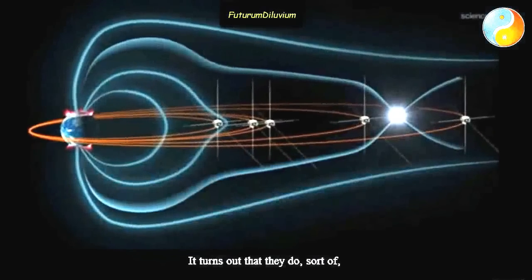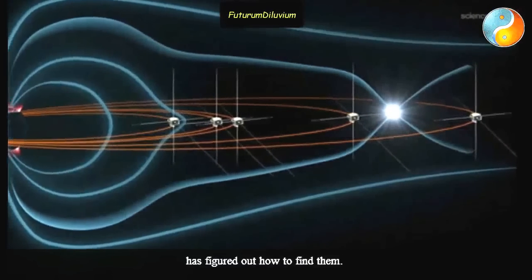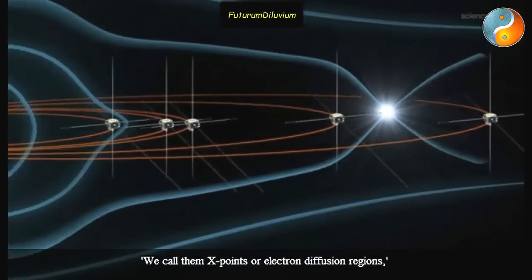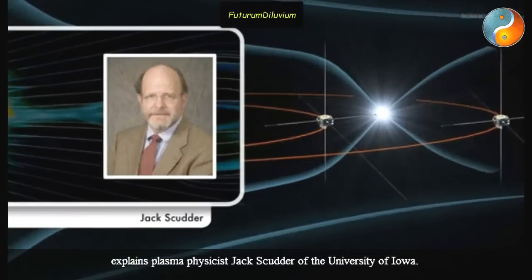It turns out that they do, sort of. And a NASA-funded researcher at the University of Iowa has figured out how to find them. We call them X-points or electron diffusion regions, explains plasma physicist Jack Scudder of the University of Iowa.